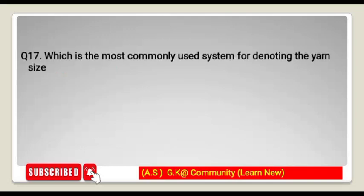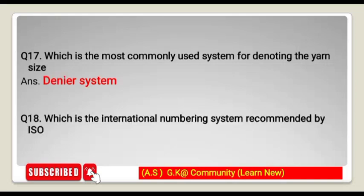Which is the most commonly used system for denoting yarn size? The denier system is the most commonly used. Which is the international numbering system recommended by ISO? The tex system — the tex system is internationally recommended by ISO.